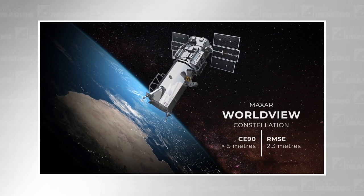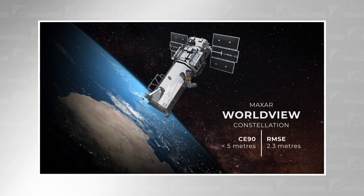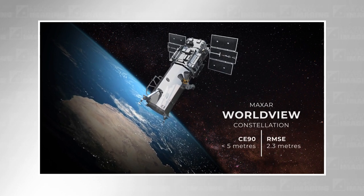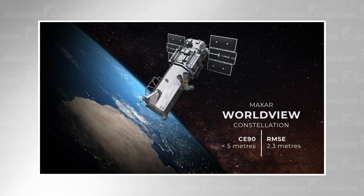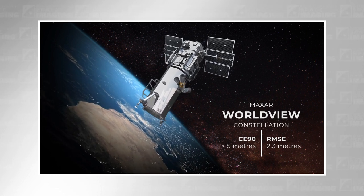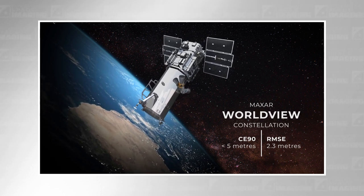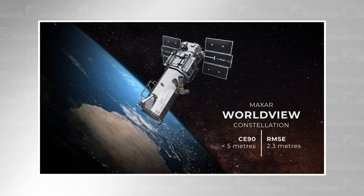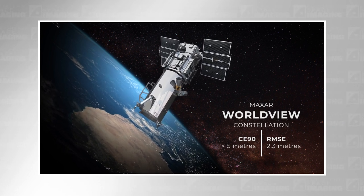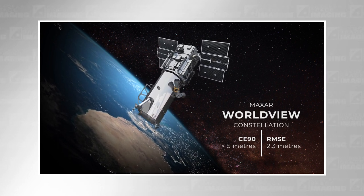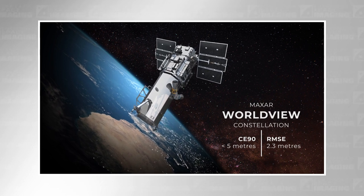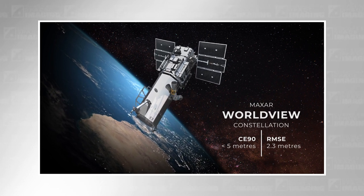The WorldView constellation has an accuracy of 5 meters CE90, but stated as RMSE it has an accuracy of 2.3 meters. That seems like a huge difference and can make some satellites appear more accurate when compared side by side. So always pay attention to these statistical descriptors when you are researching the accuracy of a satellite.